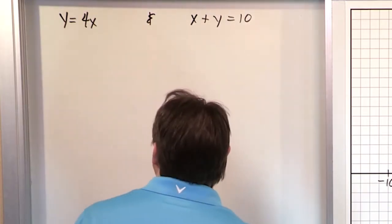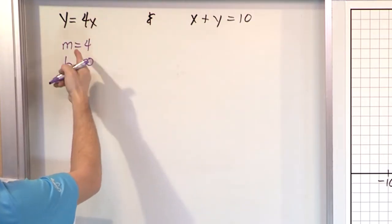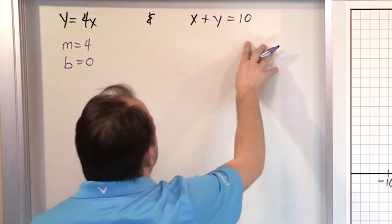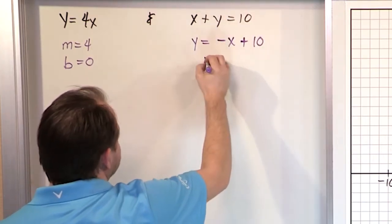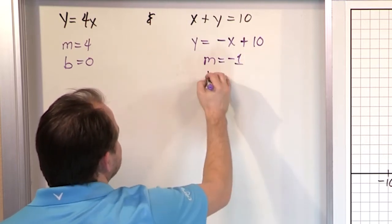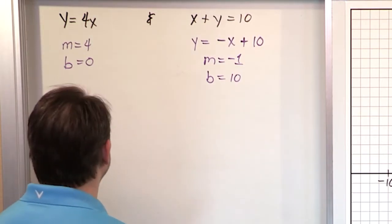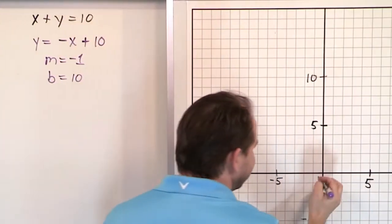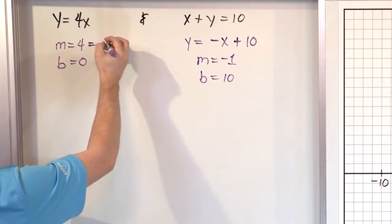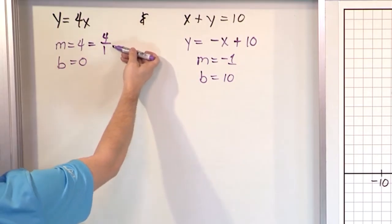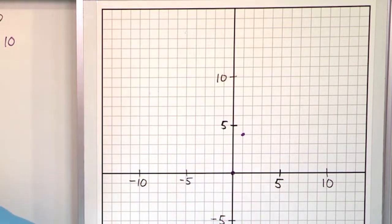So we're going to work on these. This line is very easy because it's already in slope-intercept form. The slope here is 4 and the y-intercept is 0. On the other one, we have to do a little work first — let's solve for y by subtracting x. Now we know that the slope is negative 1 and the y-intercept is 10. For the first line, the y-intercept is 0, so it goes right through the origin. The slope is 4, which is 4 over 1 — you rise 4 and run 1 to the right. So up 1, 2, 3, 4 over 1. That's the first line.